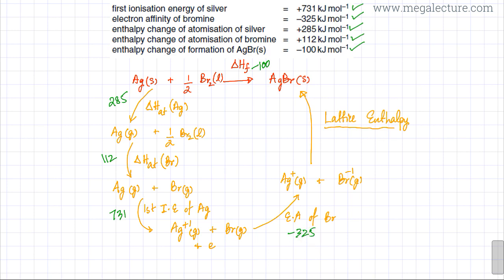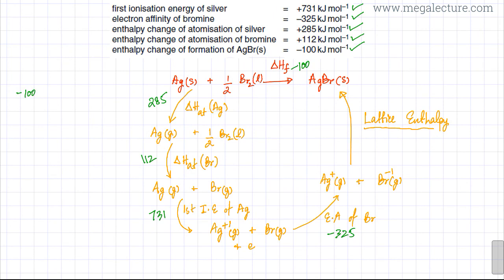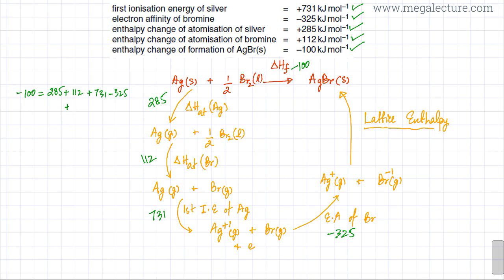All values in this Born-Haber cycle are known except for lattice enthalpy, so we just need to find that. Hess's law states the energy changes of one path equal those of the other. I'm going to equate the enthalpy of formation with the full stepwise path. So: minus 100 = 285 + 112 + 731 + (minus 325) + LE, where LE is lattice enthalpy.